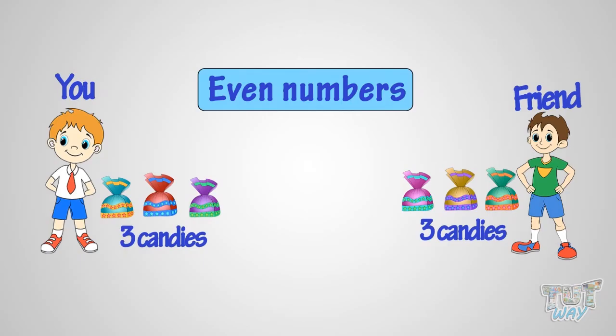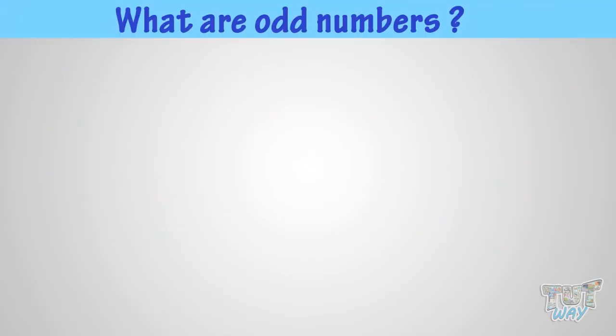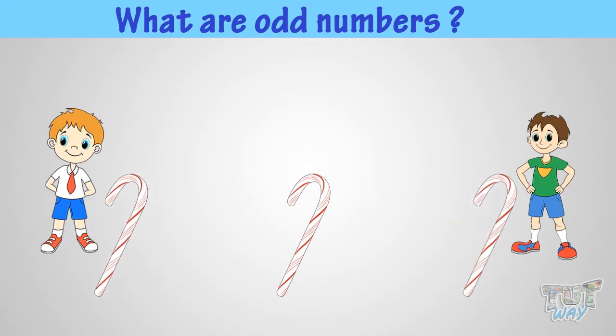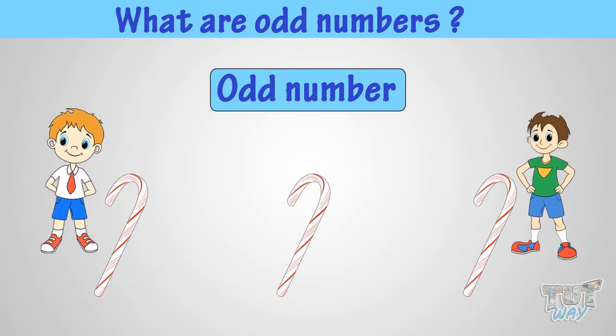Okay, now let's learn what are odd numbers. It's exactly the opposite of even numbers. That is, if you cannot share a number of things equally between the two, they are odd number of things.